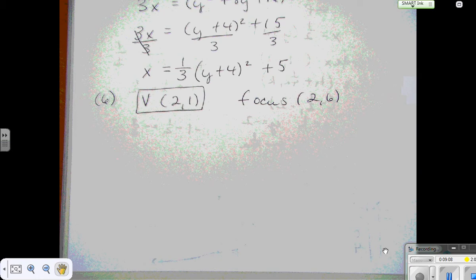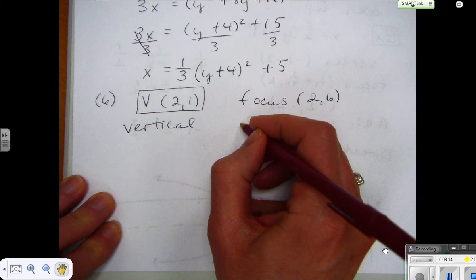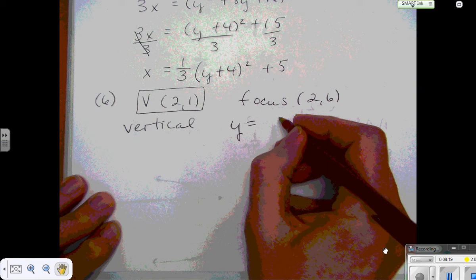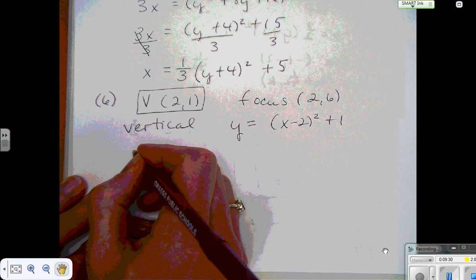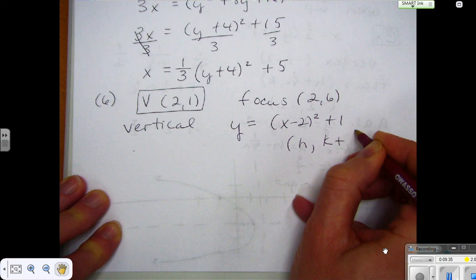So when you write your equation, it's going to be y equals. In fact, I can go ahead and write y equals, and I'm going to leave a space for the a. And it's going to be x minus 2 squared plus 1. Okay, so for your focus, it's h and then k plus 1 over 4a. So I'm going to use that k plus 1 over 4a to help me solve for a.